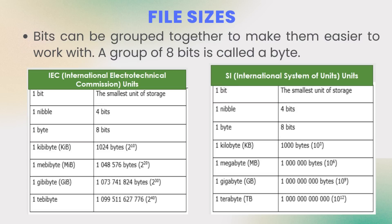Now we are talking about file sizes. A bit is the smallest unit of data, which holds either a 1 or a 0. The unit for a bit is represented by a lowercase 'b'. A byte is a sequence of 8 bits, and a byte can represent a letter, a number, or a symbol. The unit for a byte is represented by an uppercase 'B'.